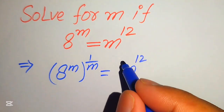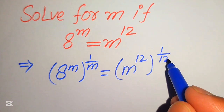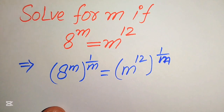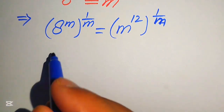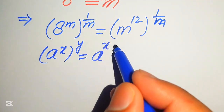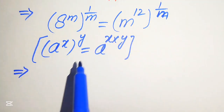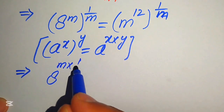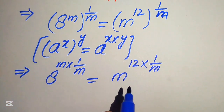When we take the 1 over m power on both sides, the right side is written as m to the power of 12, and its whole power is 1 over m. Now we apply the exponent law: if we have a to the power of x, to the power of y, it equals a to the power of x multiplied by y. So we multiply the two exponents, giving us 8 to the power of m times 1 over m equals m to the power of 12 times 1 over m.